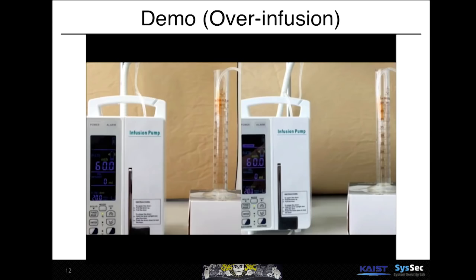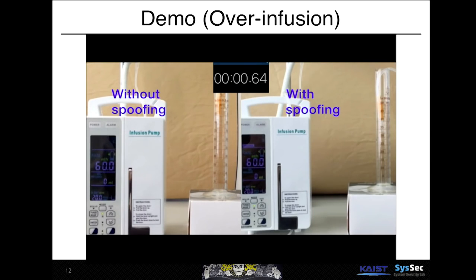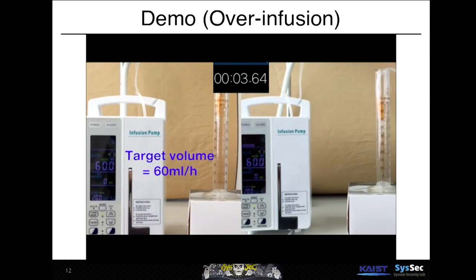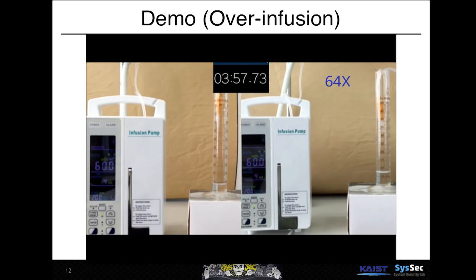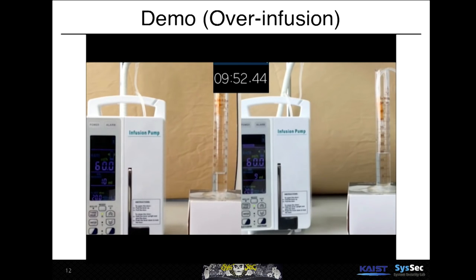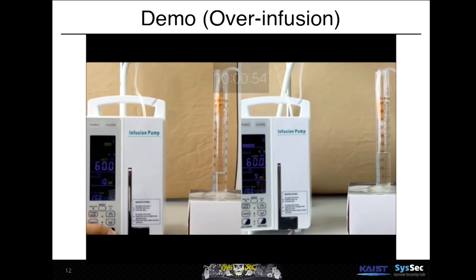Here's a demo for over-infusion. The left one is without spoofing and the right one is with spoofing. We set the rate to 60 milliliters per hour and run it for 10 minutes, expecting 10 milliliters. After 10 minutes, the spoofed one shows 20 milliliters — meaning we over-infused by 100% using saturation.